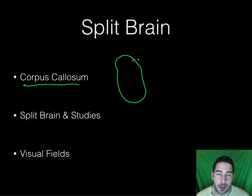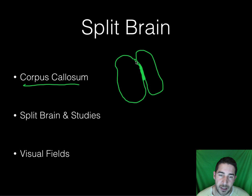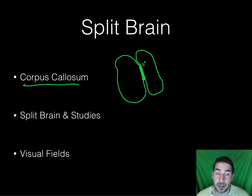If we were to draw a brain, pretend both sides are the same size. There's a structure right here in the middle that connects both sides — this is the corpus callosum. There's a little empty space on either side, and right in the middle this area crosses over, connecting the right to the left hemisphere.